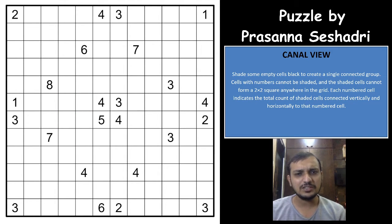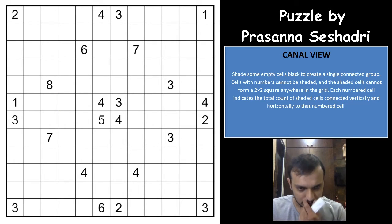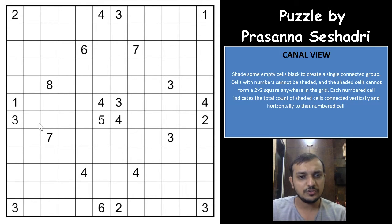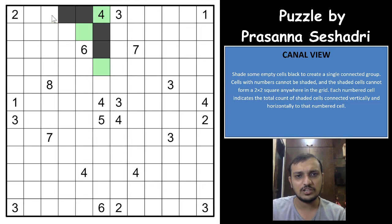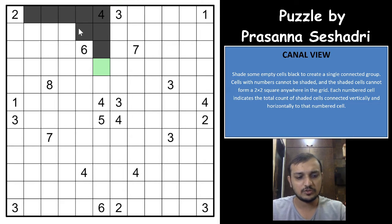Each numbered cell indicates the total count of shaded cells connected vertically and horizontally to that number. So if you have a 4, you must have exactly 4 cells connected to that 4 horizontally and vertically. If you have one more cell, it would have to be 5 cells connected — not possible.